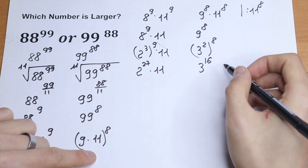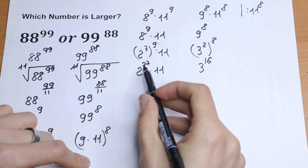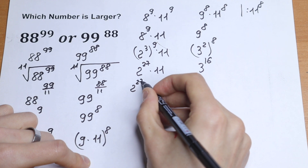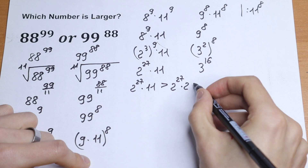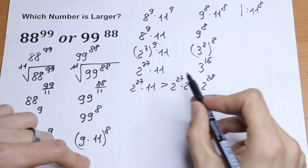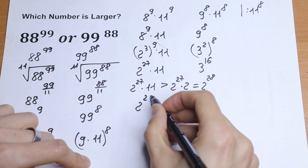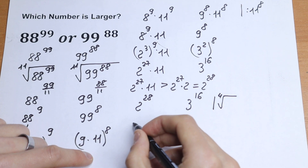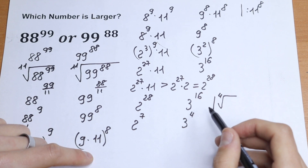We're in a good position now. We want to take the 4th root from both sides, but the left side has 2 to the 27th power, not a clean multiple of 4. So we use a small trick: since 11 is greater than 2, we have 2 to the 27th power times 11 is greater than 2 to the 27th power times 2, which equals 2 to the 28th power. Now we can take the 4th root of 2 to the 28th power on the left and 3 to the 16th power on the right, giving us 2 to the 7th power versus 3 to the 4th power.